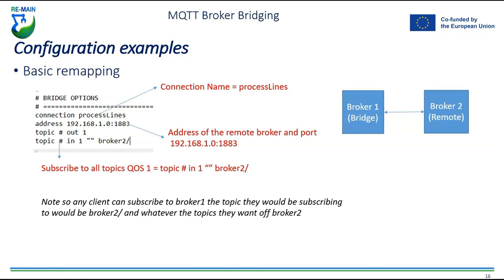Here's an example of basic remapping. The connection name is 'process lines', with an address and port number configured. Topics going out use QoS 1, and for incoming topics, a prefix of 'broker two' is added to any topic received from the broker you've connected to, allowing you to identify the data source when filtering later.